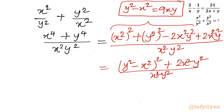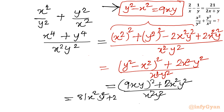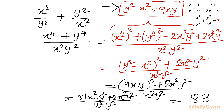Now in place of y² minus x², we substitute 9xy. So we get (9xy)² plus 2x²y², divided by x²y², which gives 81x²y² plus 2x²y² over x²y², equaling 83x²y² over x²y². The x²y² cancels, giving a final answer of 83.